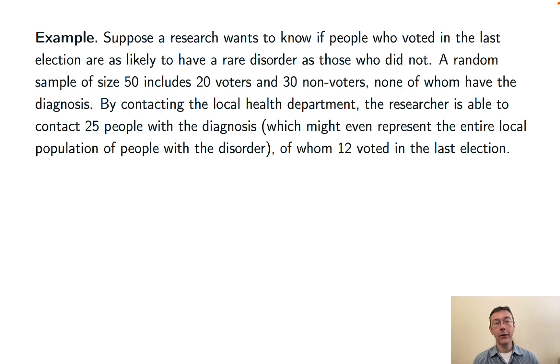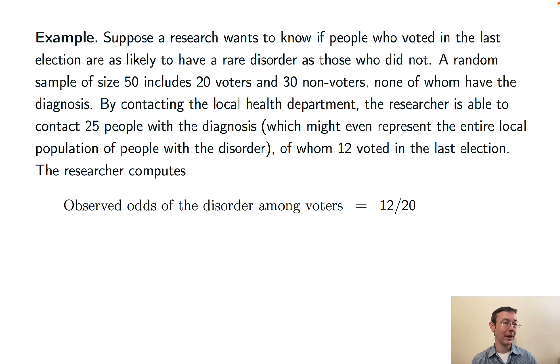So the researcher contacts the local health department and is able to contact 25 people that do have the diagnosis. And you can imagine this as representing maybe even the entire population that has been diagnosed with this condition in that city or state or other municipality. Of those 25 people that they have with the diagnosis, 12 voted in the last election. Now the researcher is actually able to compute some odds, and therefore odds ratios.